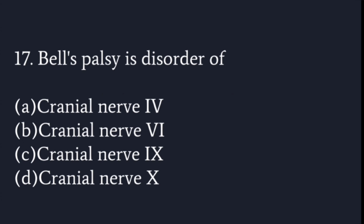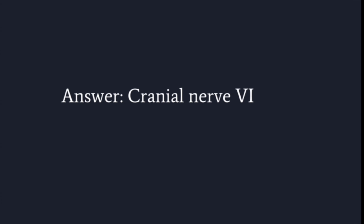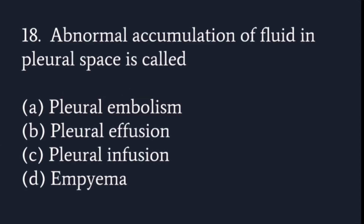Bell's palsy is a disorder of which cranial nerve: cranial nerve 4, 6, 9, or 10? The answer given is cranial nerve 6. Abnormal accumulation of fluid in the pleural space is called: pleural embolism, pleural effusion, pleural infusion, or empyema?